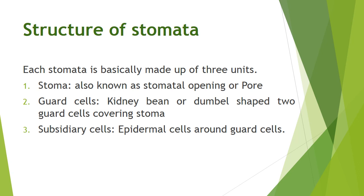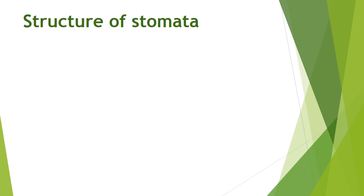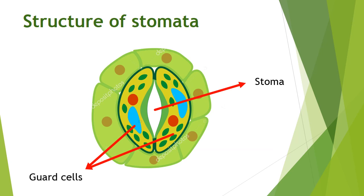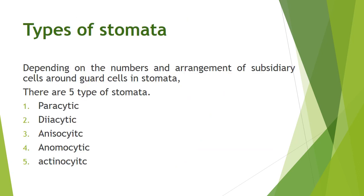Each stomata is composed of three units: number one is the stoma, or the opening or pore; number two is the guard cells, which are kidney bean or dumbbell shaped — two guard cells covering the stoma; and number three is the subsidiary cells, which are epidermis cells around the guard cells. In the diagram, the white colored center part is the stoma, the dumbbell-shaped two cells are the guard cells, and the green-colored epidermis cells around them are the subsidiary cells.